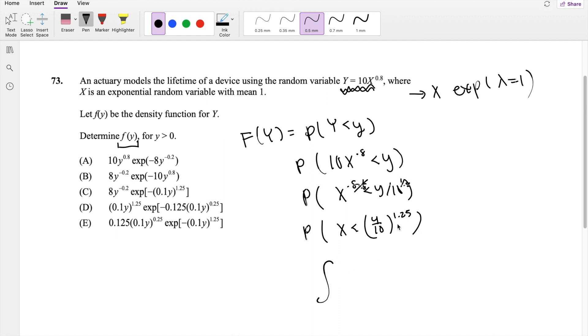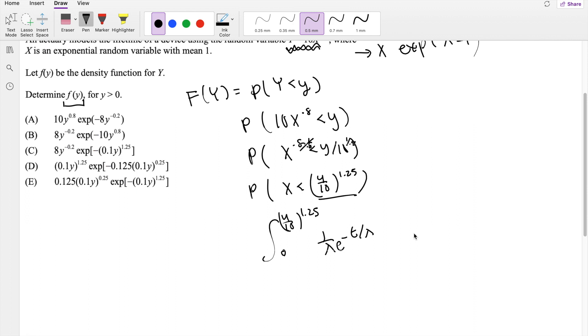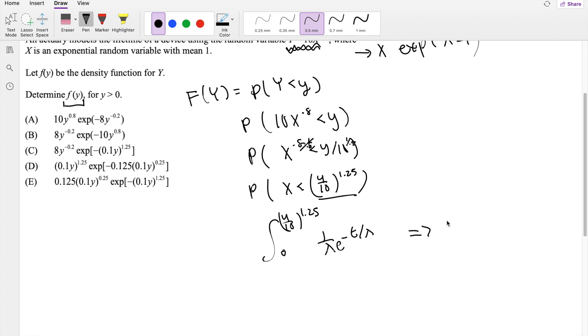And then now we're ready to rock and roll. So we're looking for x is less than this value here. And x is an exponential function, which means it's going from 0 to infinity. So from 0 to y over 10 to the 1.25 of 1 over lambda e to negative t over lambda. But this is honestly the CDF.